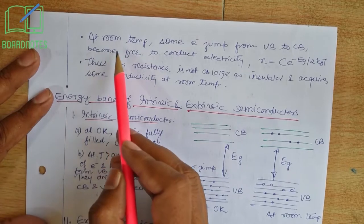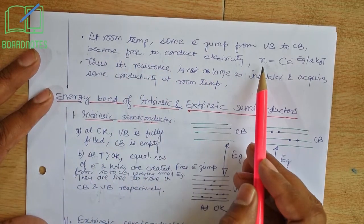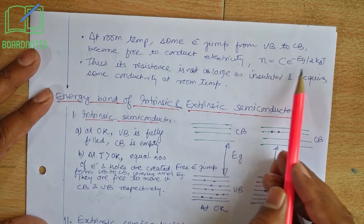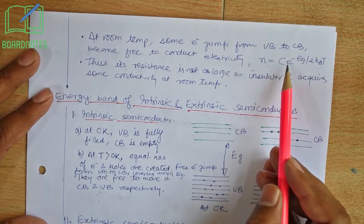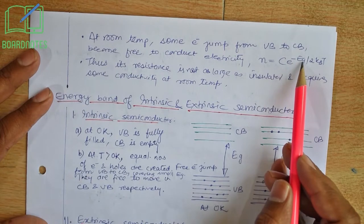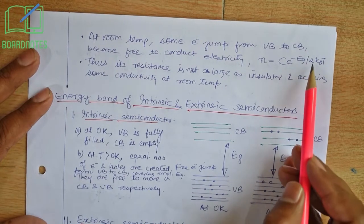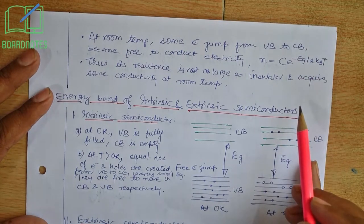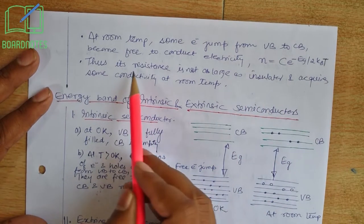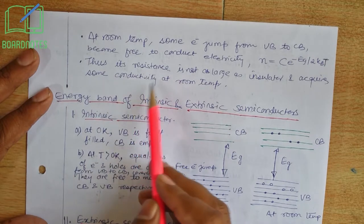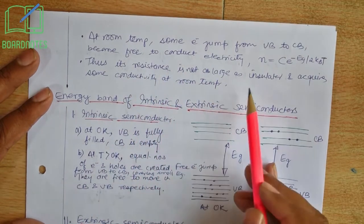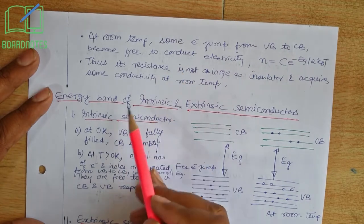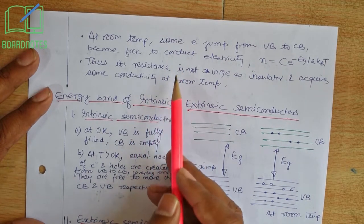It should be noted that the number of electrons that jump from the valence band to the conduction band is given by the formula: N equals C times e to the power of minus Eg divided by 2kbT, where Eg is the energy gap, kb is Boltzmann's constant, and T is the absolute temperature. Therefore, the resistance in case of semiconductors is not as large as in the case of insulators, and they acquire some conductivity even at room temperature. On increasing temperature, the conductivity is further increased.